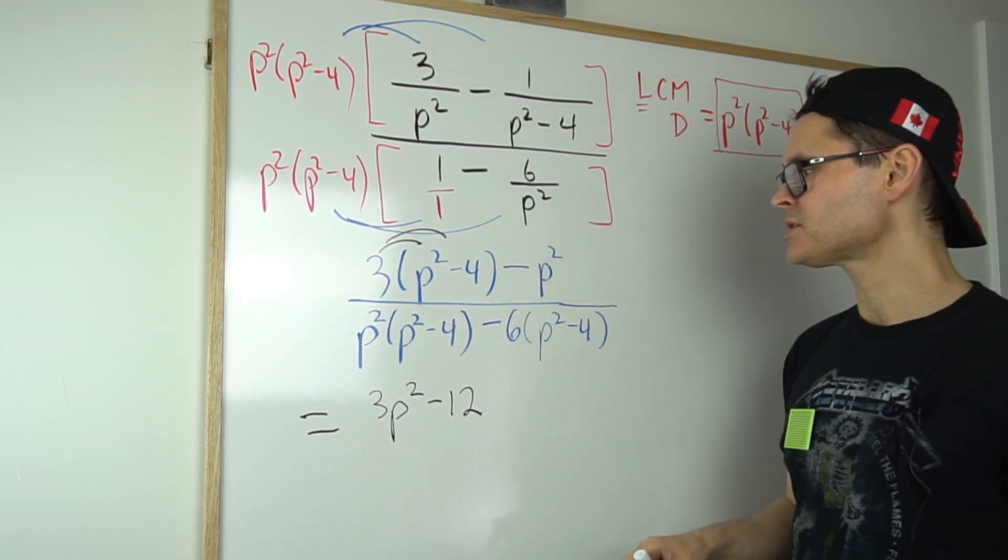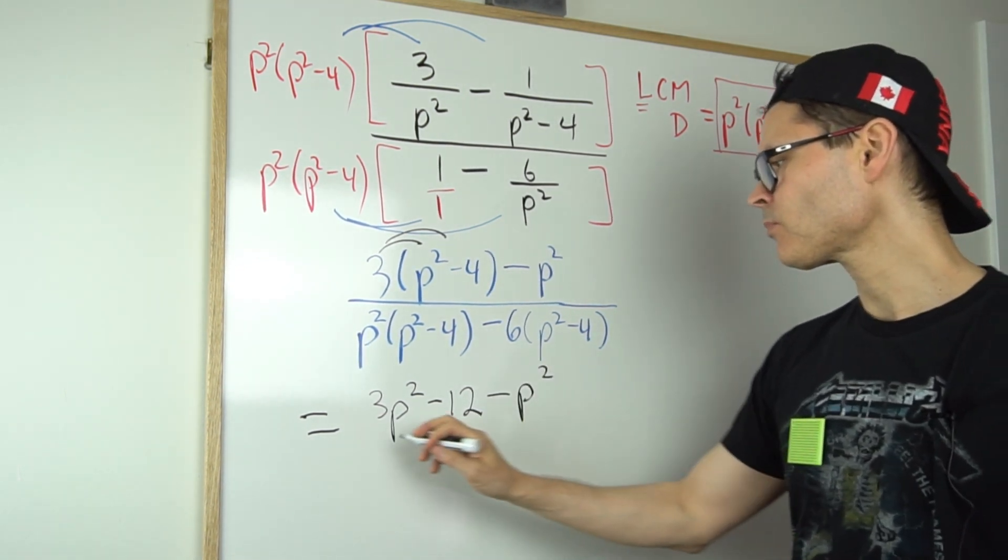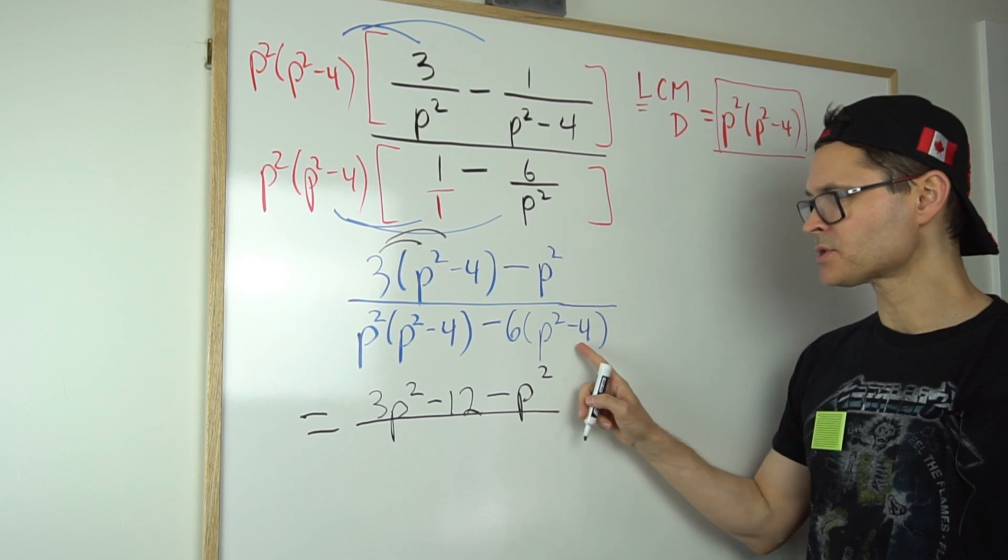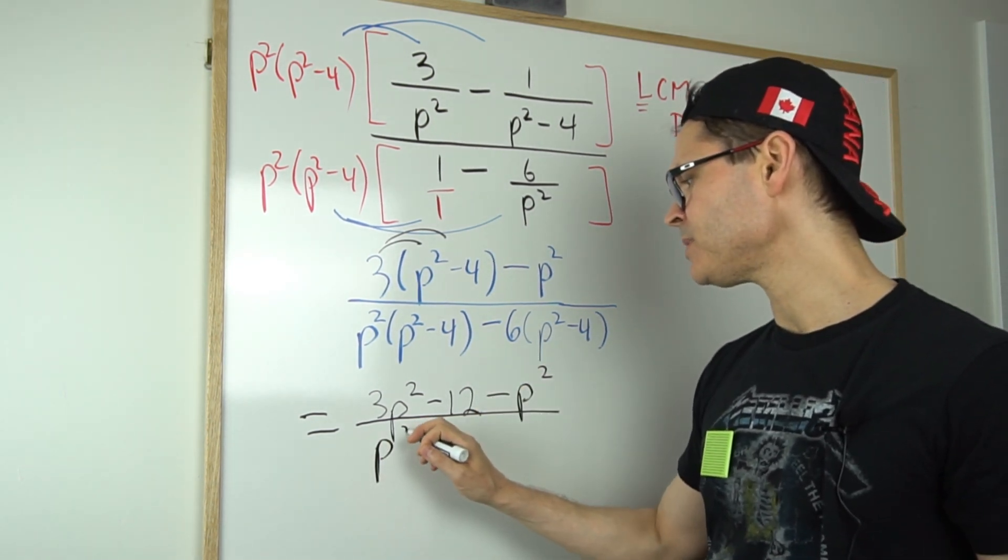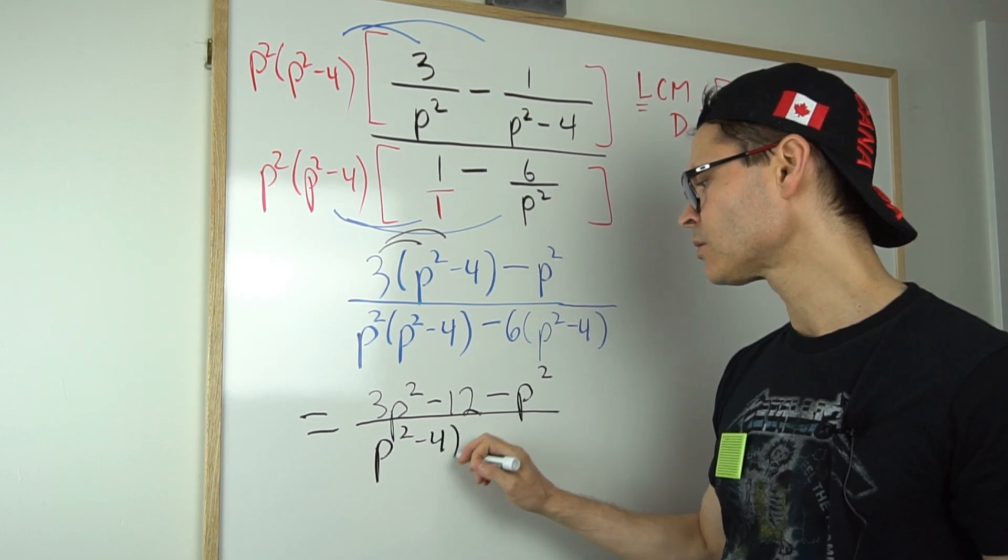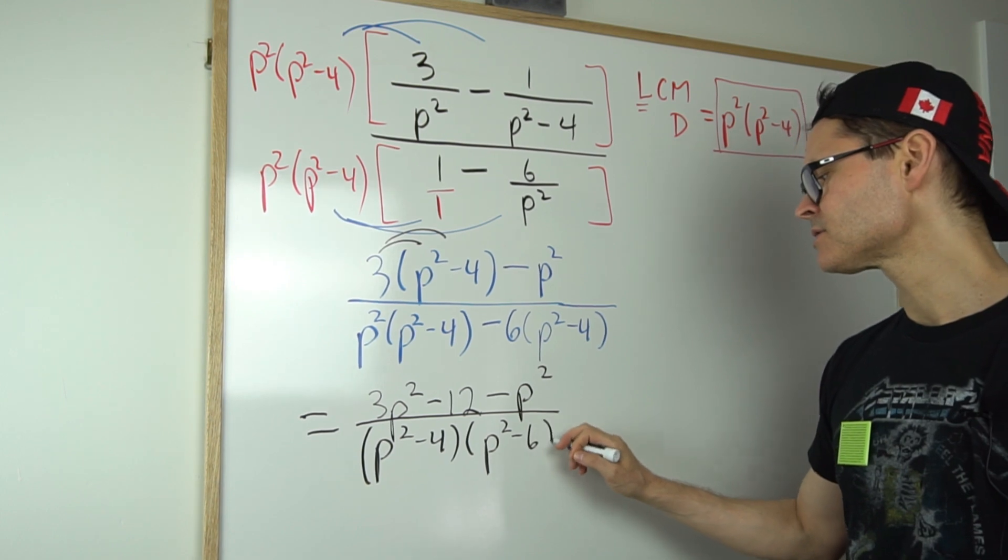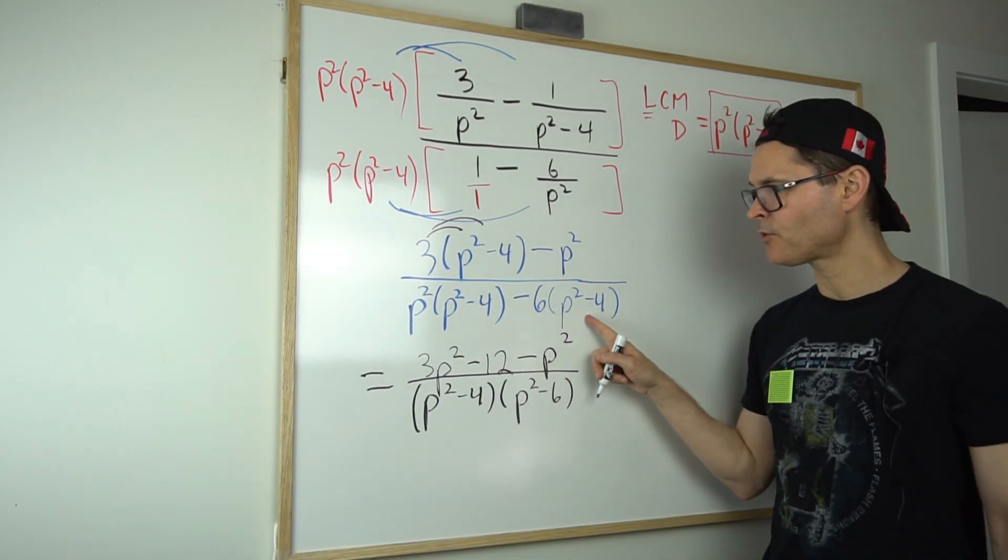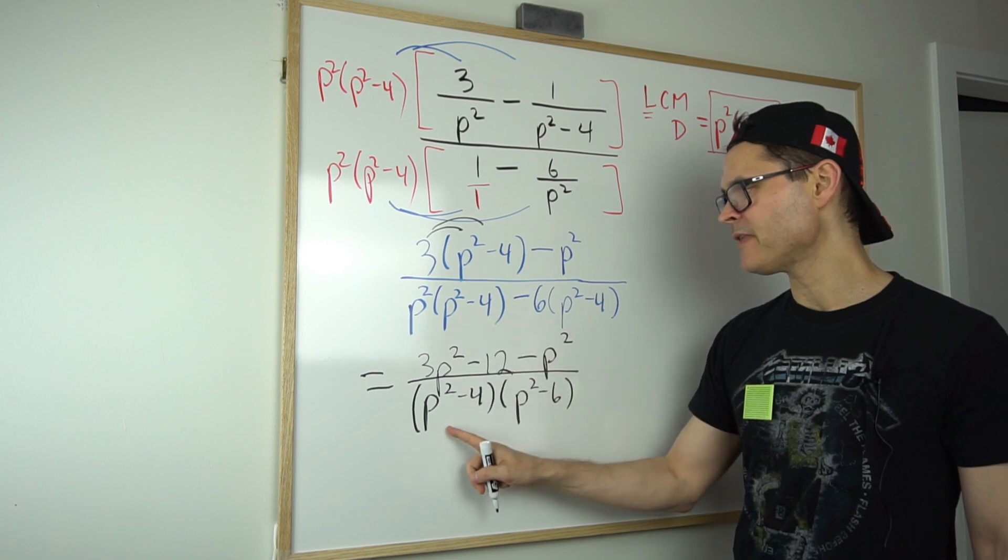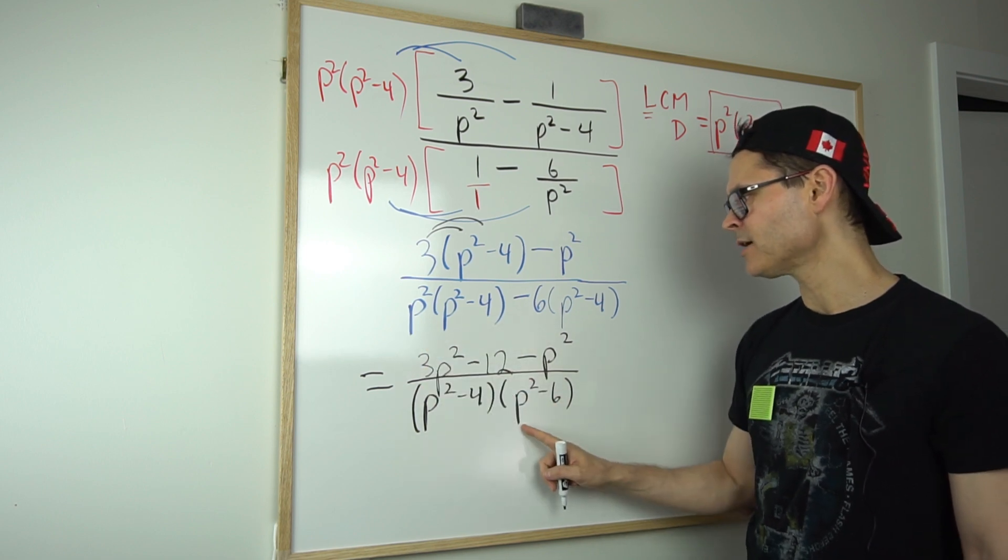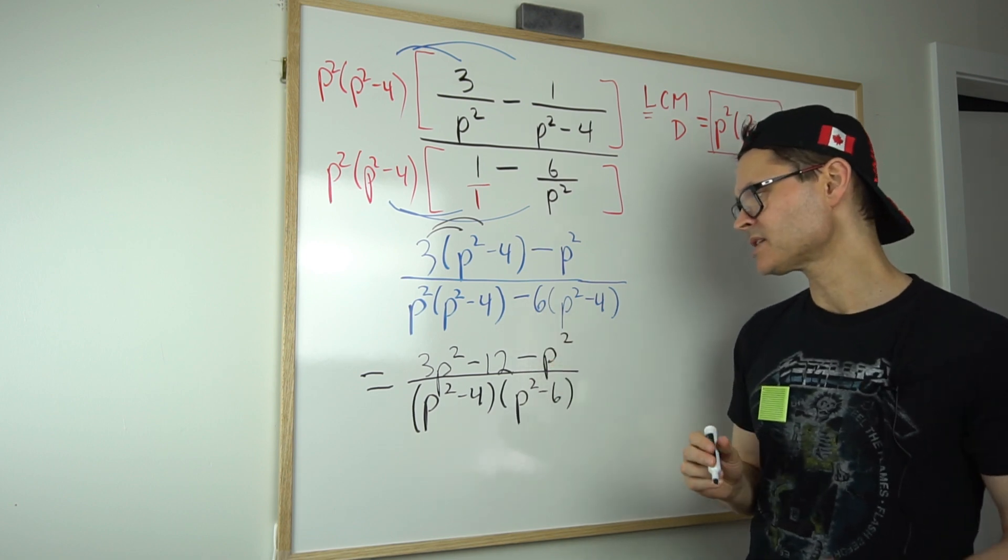I do notice there's a common factor here. So in the denominator it could be written as p squared minus four multiplied by p squared minus six. Do you see p squared minus four is common, so I'm factoring it out? And then if I divide this by that common factor, I'm left with p squared, and same here—if I divide this by p squared minus four, I'm left with negative six.